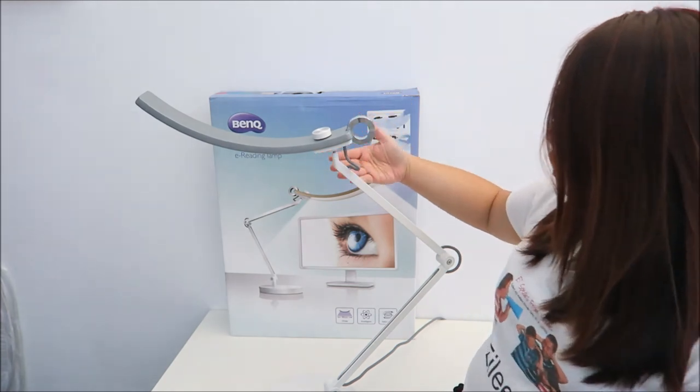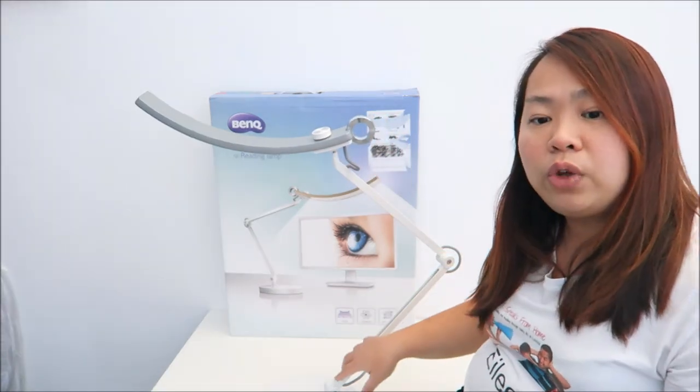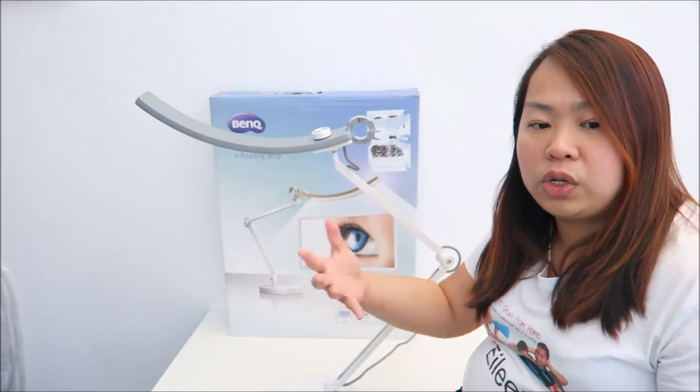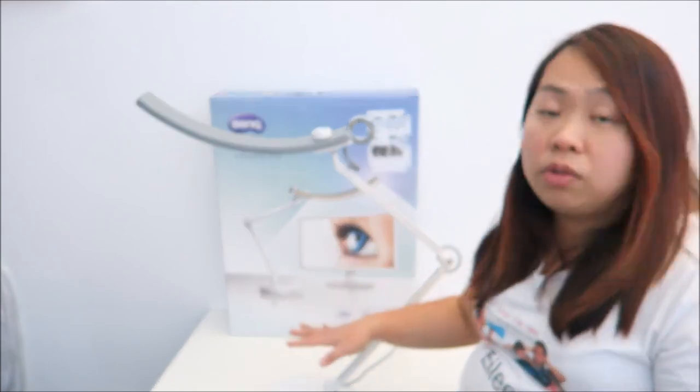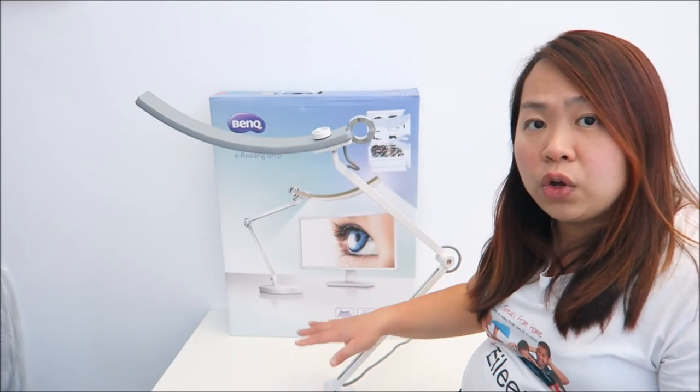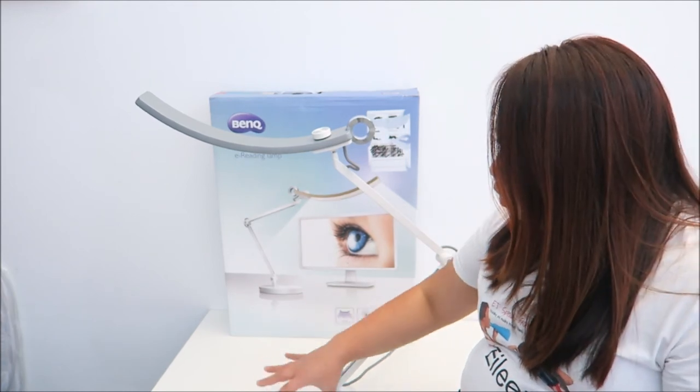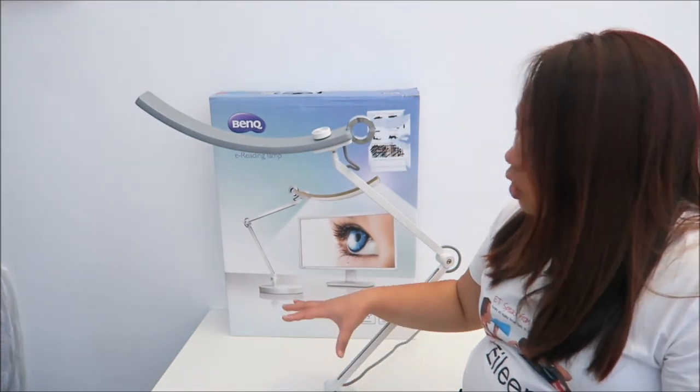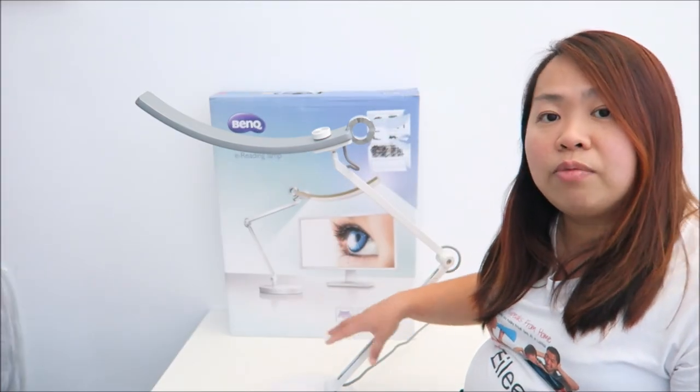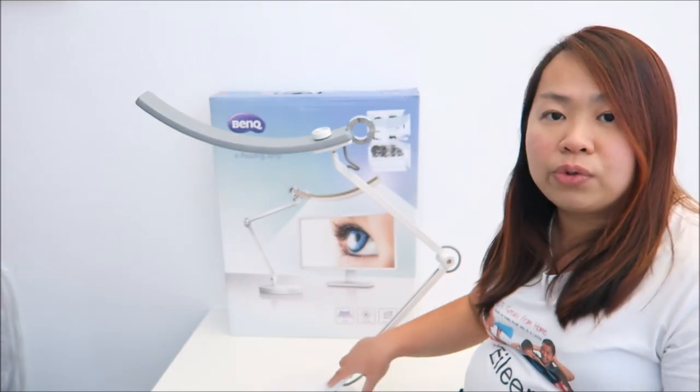And the next good feature is that they come with this long arm, so it's sort of easy to adjust to the right position. They do sell the table clamp which is not included. It's sold separately. So if you don't have a lot of table space, you can get those table clamp to clamp it onto the side of your table itself.